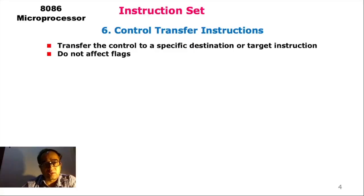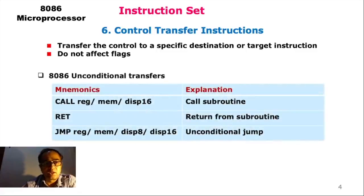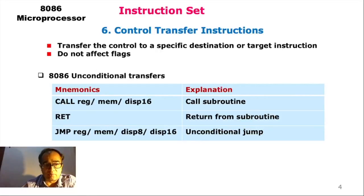There are control transfer instructions that transfer control to a specific destination target instruction, and these do not affect the flags. Some of the control transfer instructions are CALL, RET, and JMP. CALL is for calling a subroutine, RET means return from the subroutine, and JMP performs unconditional jumps.